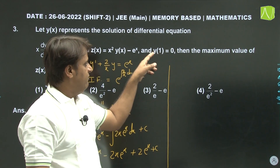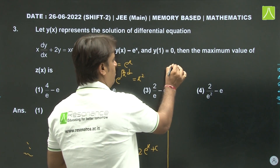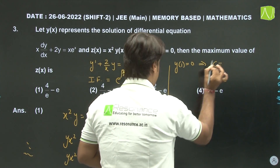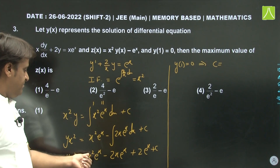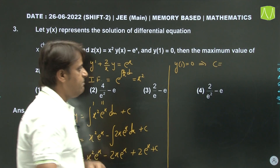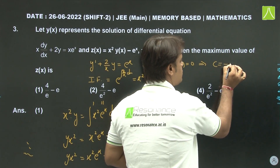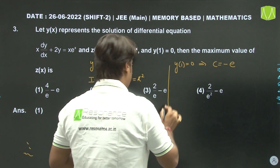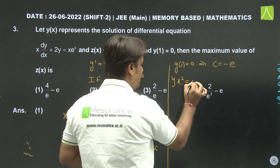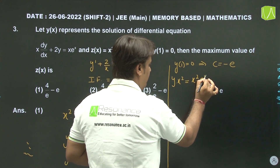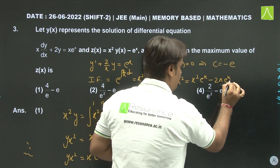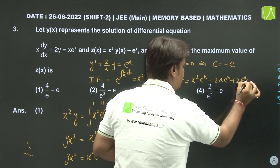It is given that when x = 1, y = 0. So y(1) = 0, which implies: 0 = e - 2e + 2e + C, so C = -e. Therefore: y × x² = x² eˣ - 2x eˣ + 2eˣ - e.